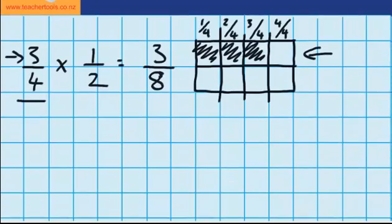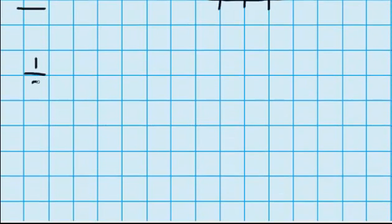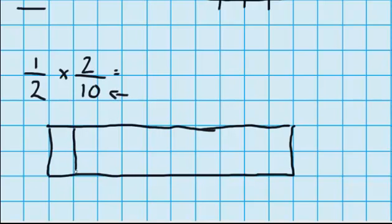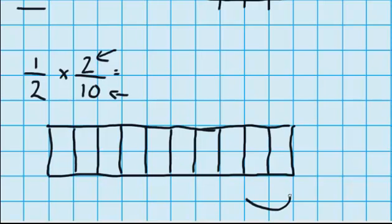Let's try another question. This time I want to shade 1 half of 2 tenths. I'm going to start by drawing out my tenths. So now that I've drawn this shape, I need to cut it into tenths, like my question says. So now my shape is cut into tenths. And it says that the numerator tells me that I'm looking at 2 of these tenths. So I'm going to look at these 2 tenths down here.